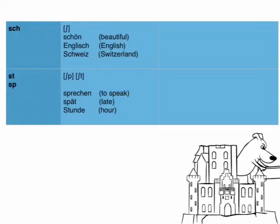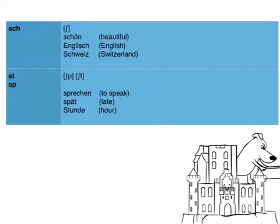We have some sounds to go. The SCH sound: S-C-H is actually just one sound and it's Sh. It's unvoiced, so it's not Ž. Hear the difference between Ž and Sh. Examples: Schön, Englisch, Schweiz. Once again: Schön, Englisch, Schweiz.